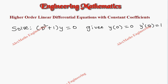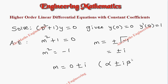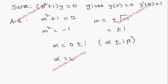Hi students, this is Alex. The problem is to solve (D² + 1)y = 0, and they have given some conditions to find the unknown constants. First, let's write the auxiliary equation, where we replace capital D with small m: m² + 1 = 0. From this, m² = -1, so m = ±√(-1) = ±i. Writing in complete form: 0 ± i. This is of the form α ± iβ, so by comparison α = 0 and β = 1.